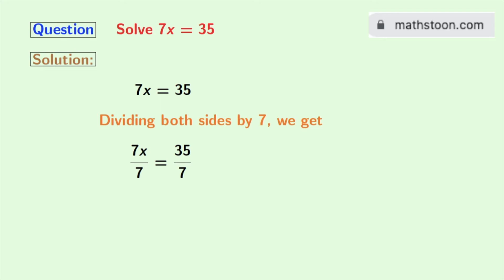Doing so, we get 7x by 7 is equal to 35 by 7.